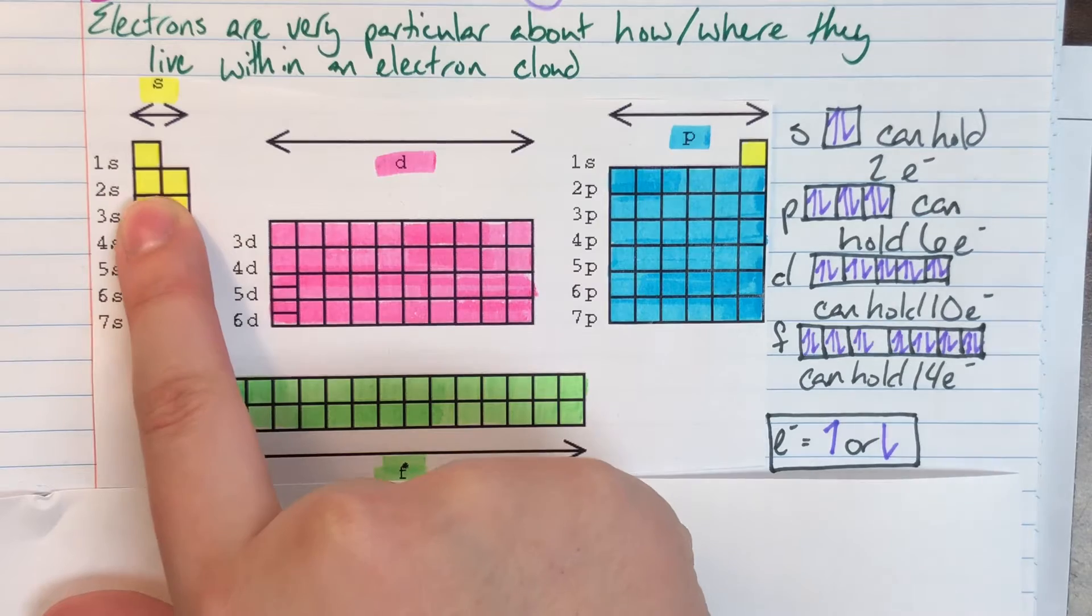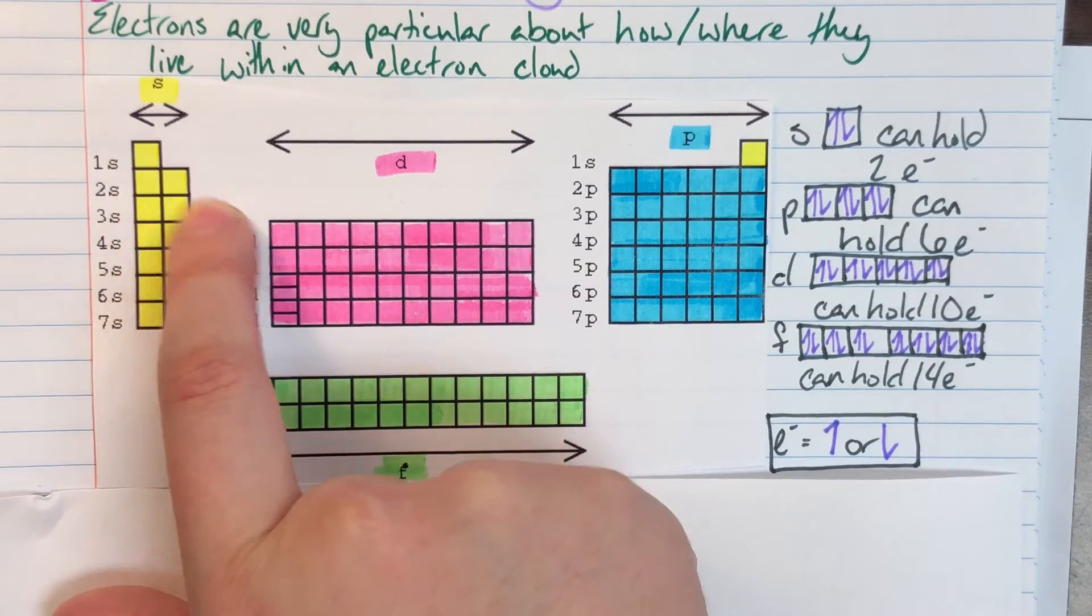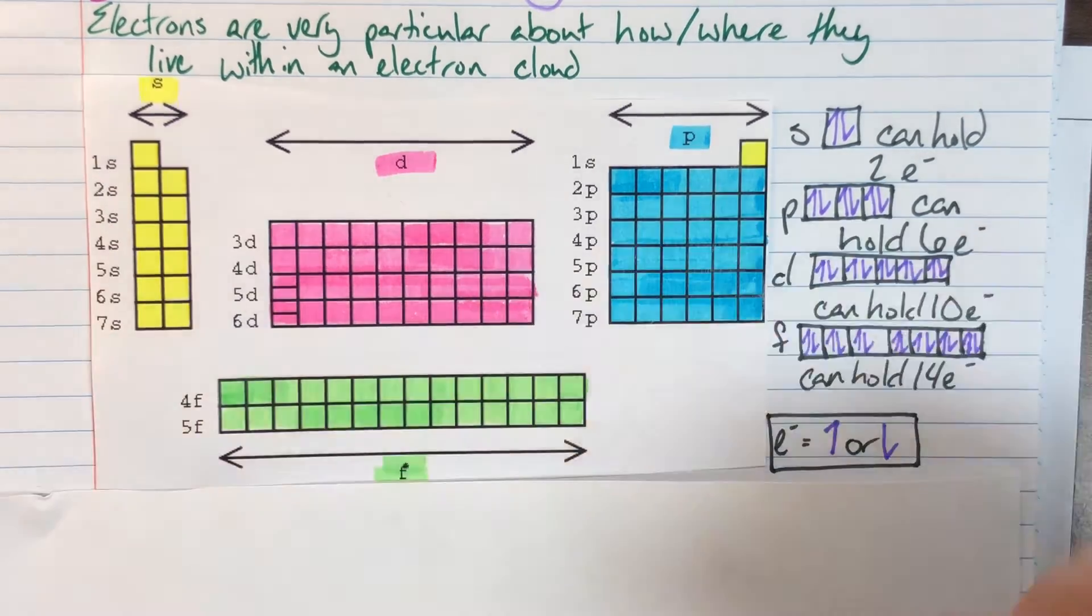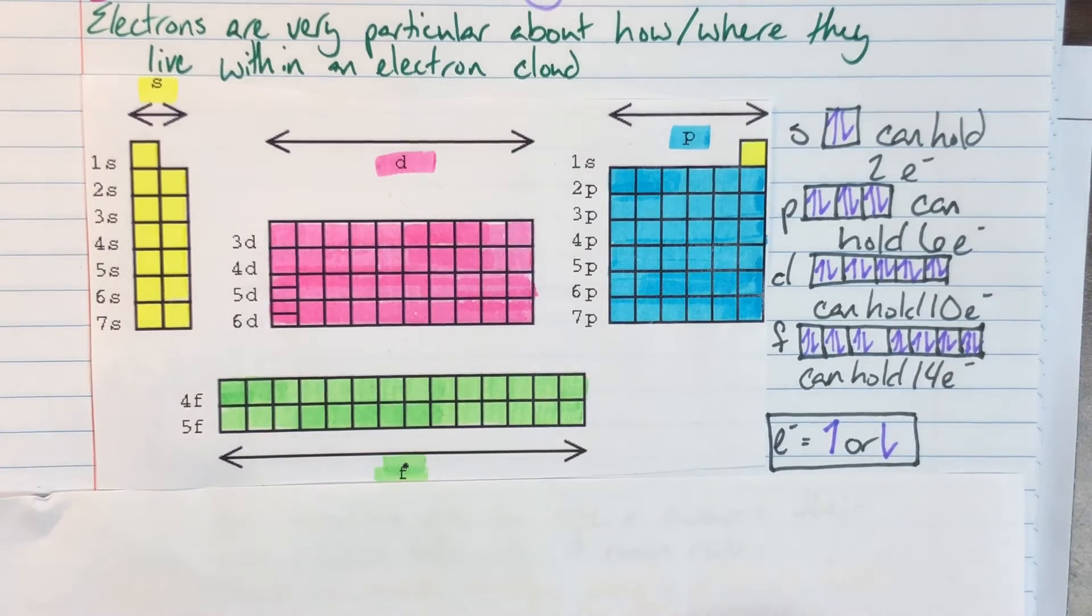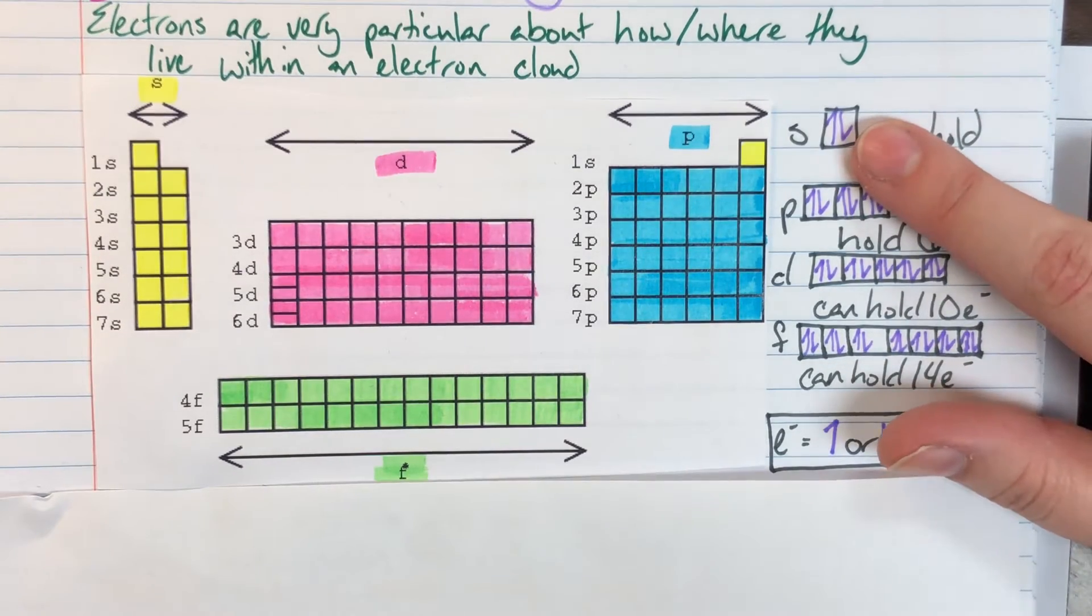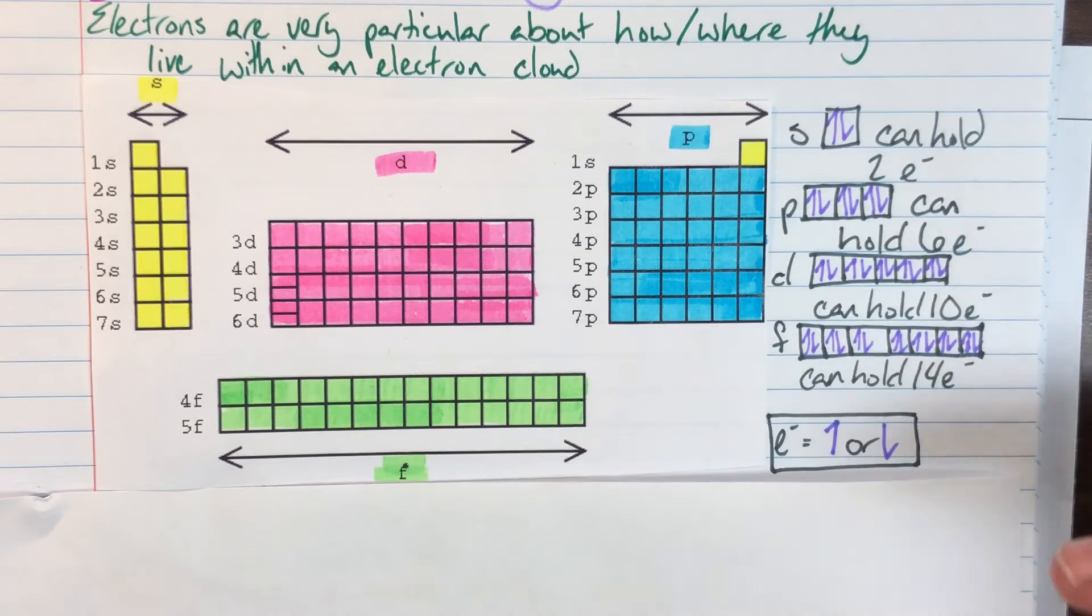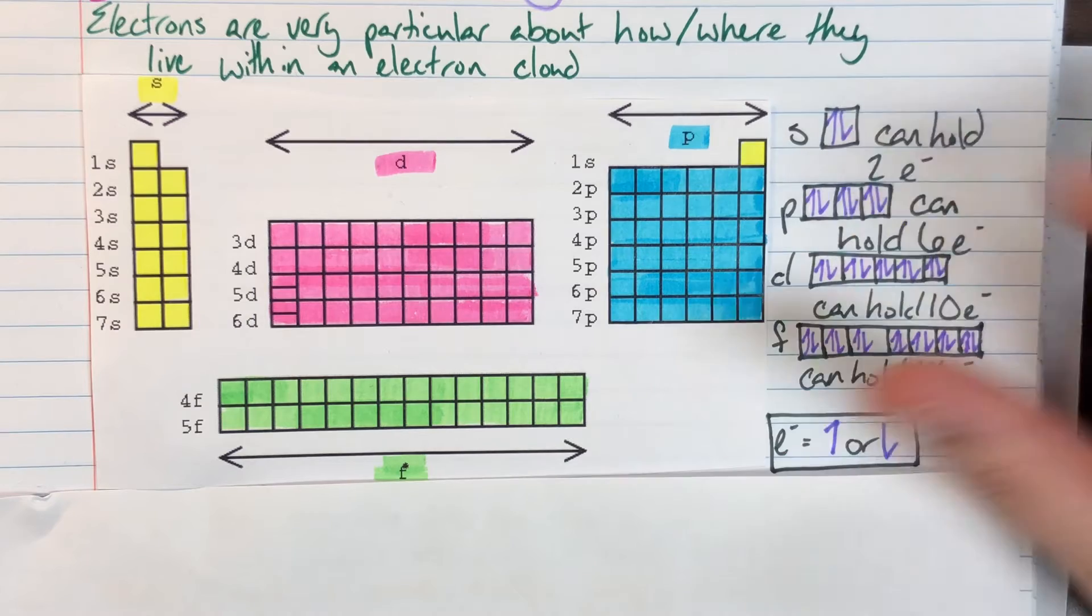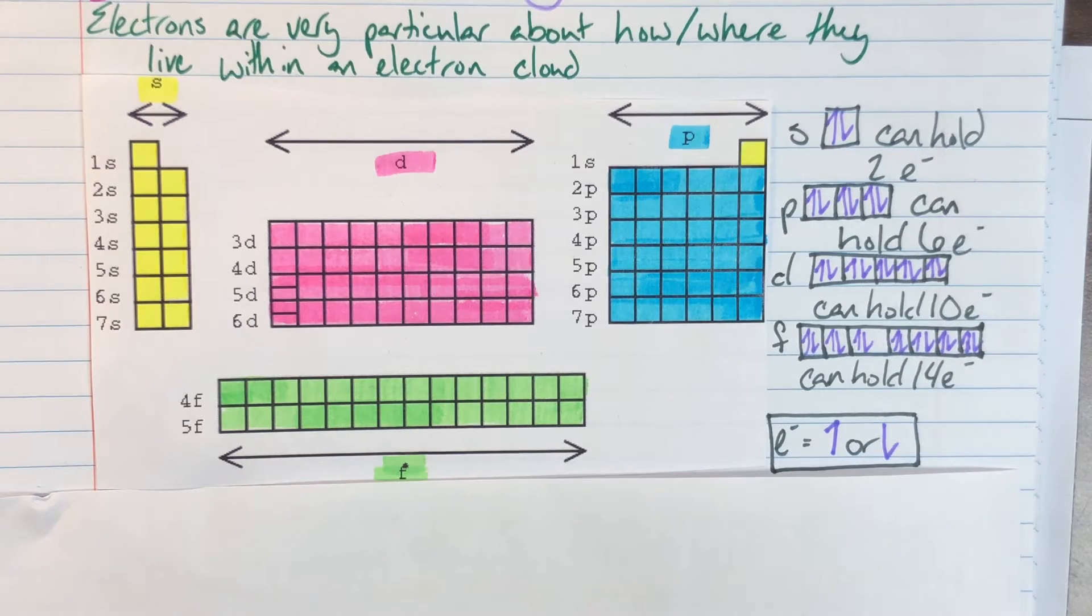My S block in 2s, I can only have one, two before I run out of S block. Since I can only have two electrons in my S block, I only need one box since one box can hold two electrons. So I have a spin up and a spin down in that S block.